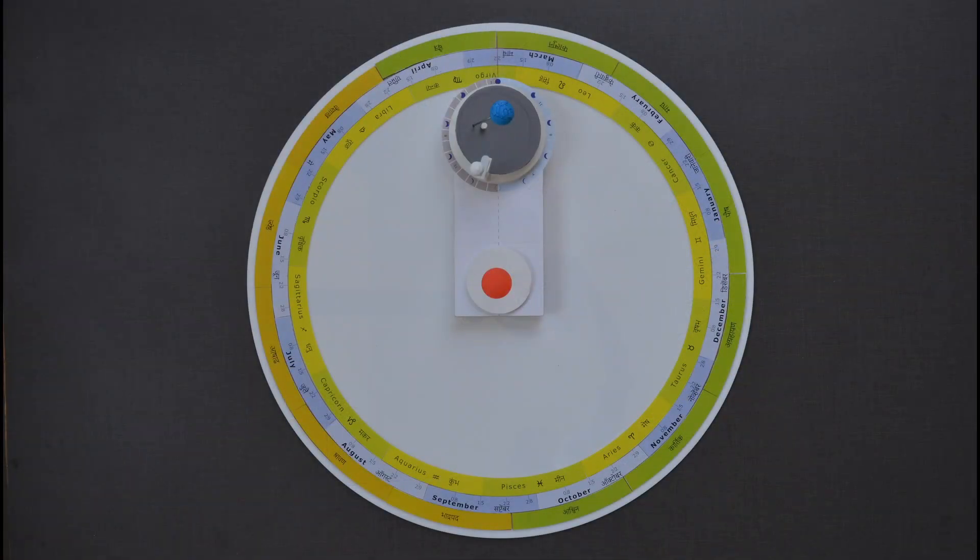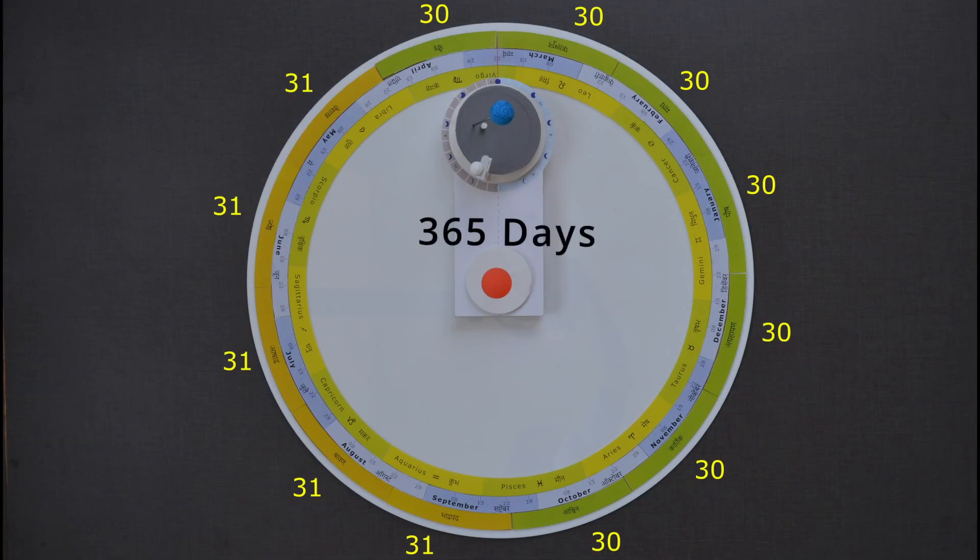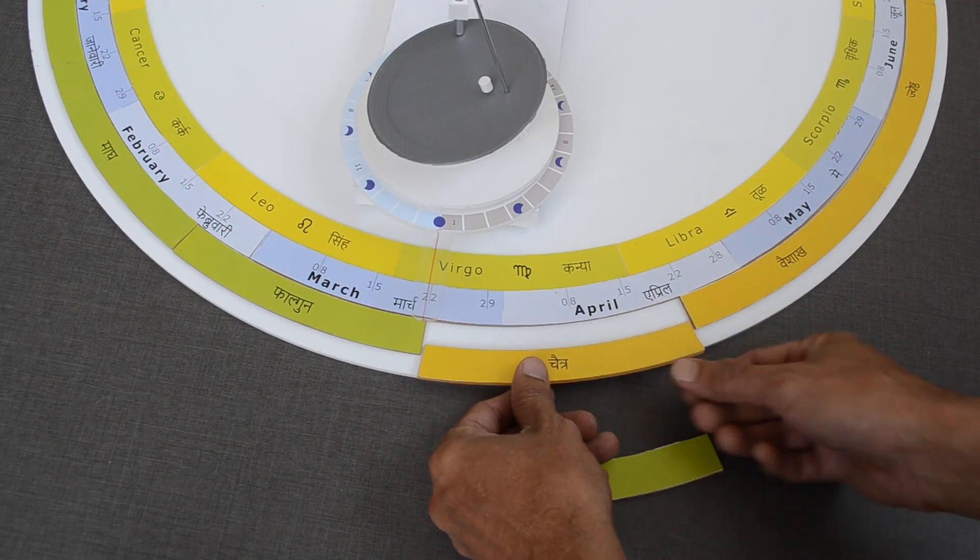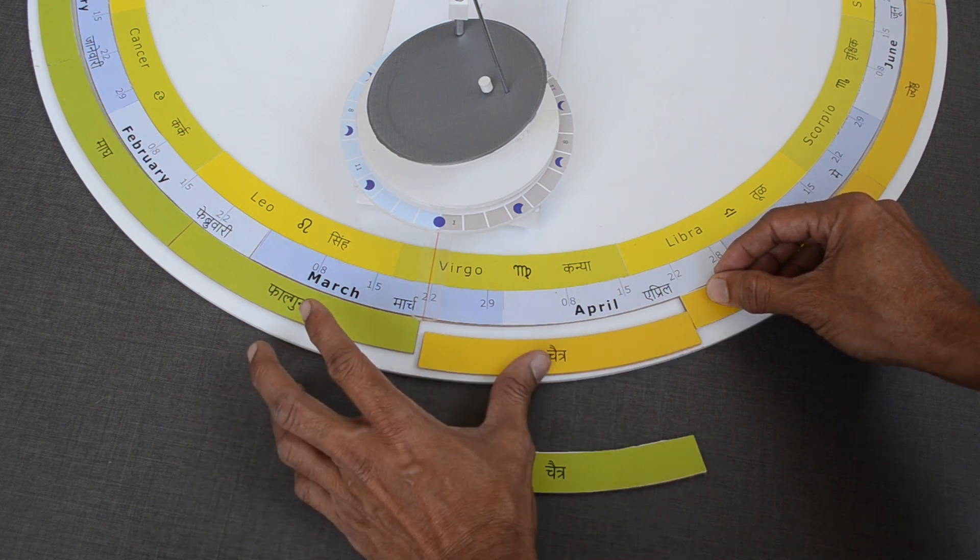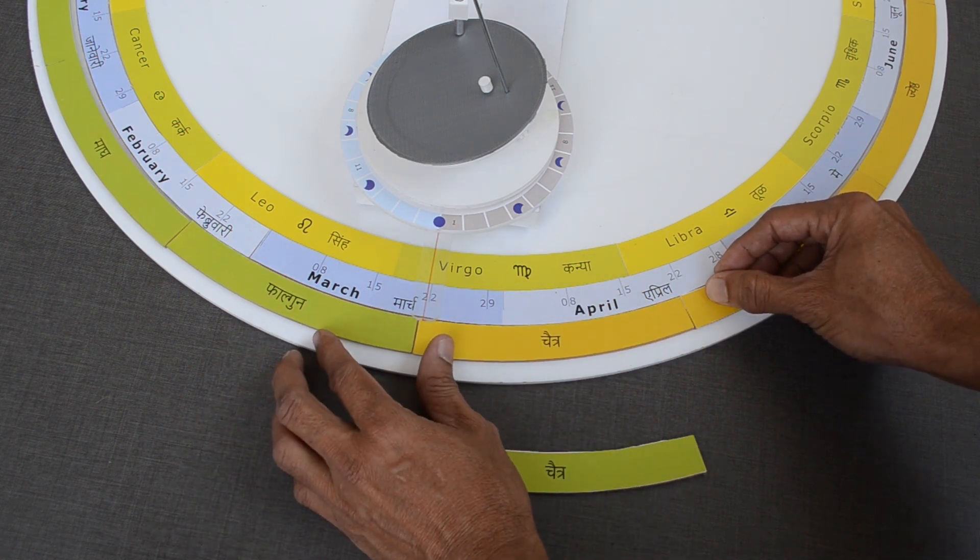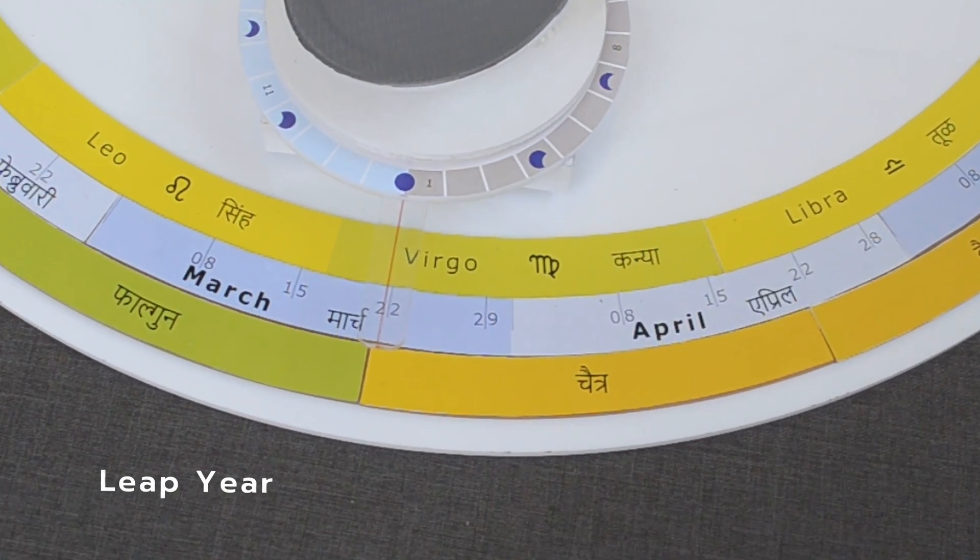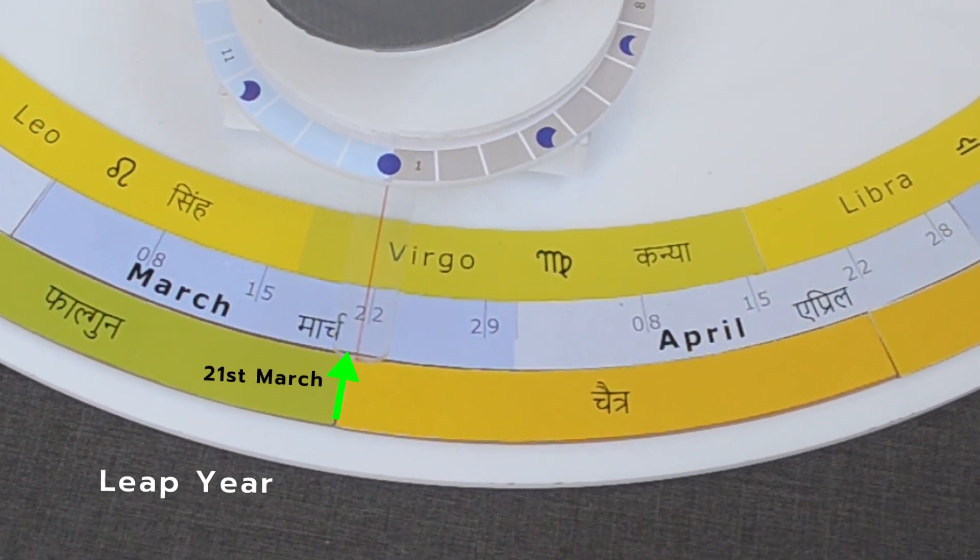All months together account for 365 days. When there is a leap year, Chaitra has 31 days instead of 30. In the leap year, Chaitra starts on 21st March, instead of 22nd March of the Gregorian calendar.